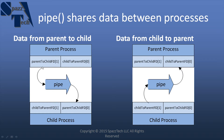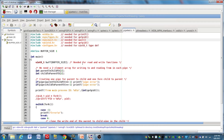One pipe sends data from the parent to the child, and the other pipe sends data from the child to the parent. In the code we're about to look at, I'm using two different file descriptors to do that — one called 'parent to child' and one called 'child to parent'. Here we have the code that's going to demonstrate how a pipe works, and I started off with the code from my previous video for the fork function.